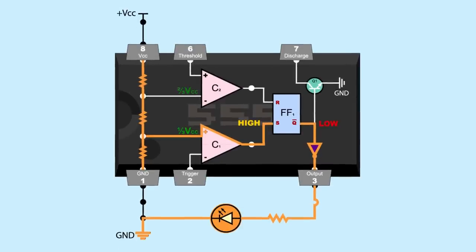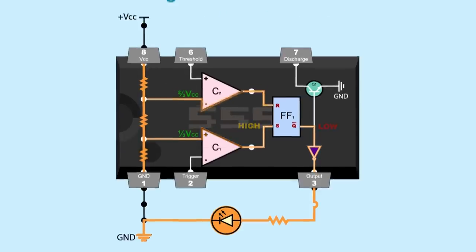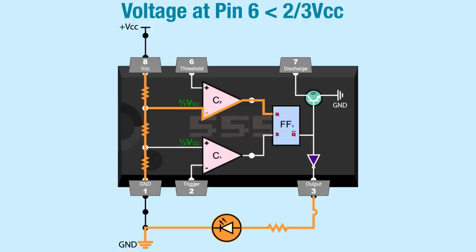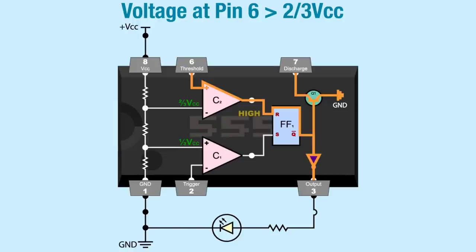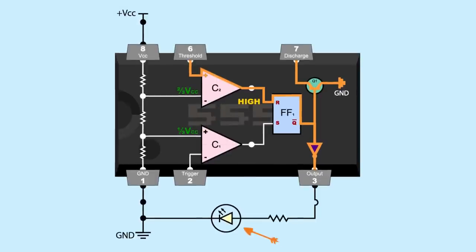The negative input of comparator 2 is supplied 2/3 VCC from the voltage divider. When the voltage at pin 6 is lower than 2/3 VCC, comparator 2 outputs low. But when the voltage at pin 6 is higher than 2/3 VCC, comparator 2 outputs high, resetting the flip-flop, causing the 555 to output low, turning off the LED, but turning on the transistor connected to the discharge pin. So a voltage lower than 1/3 VCC at pin 2 sets the 555 output high, and a voltage higher than 2/3 VCC at pin 6 resets the 555 output low.